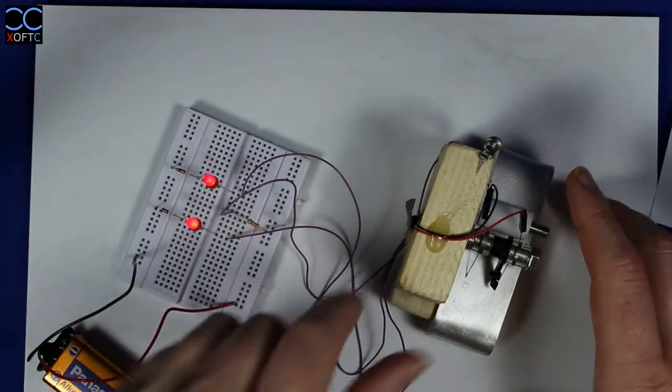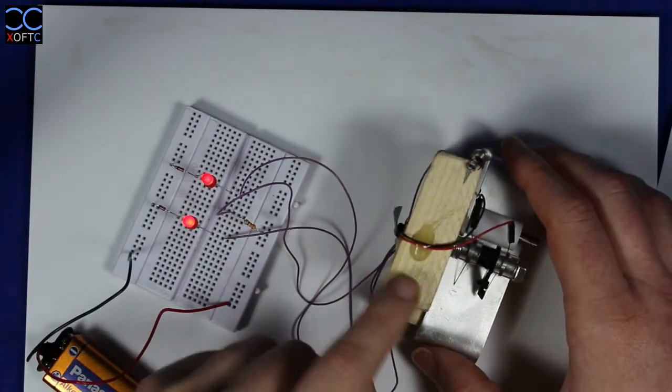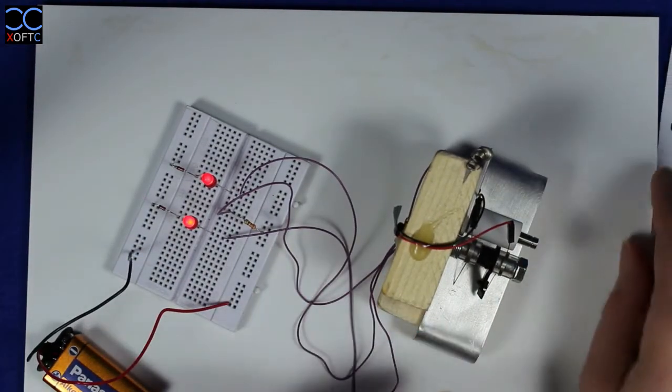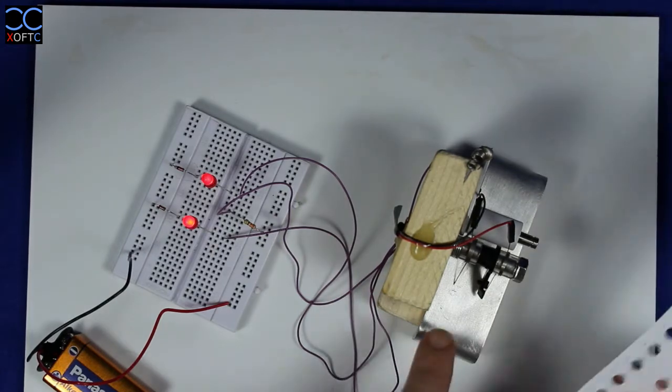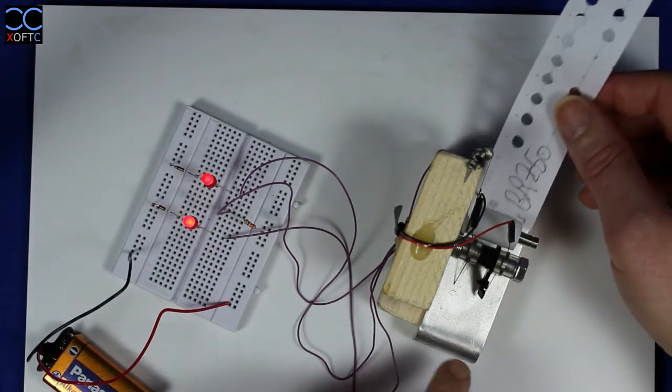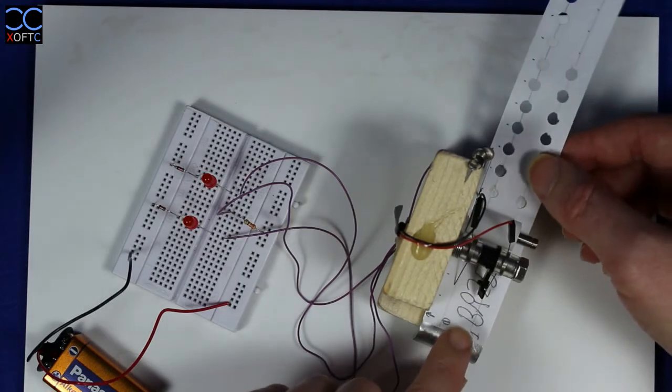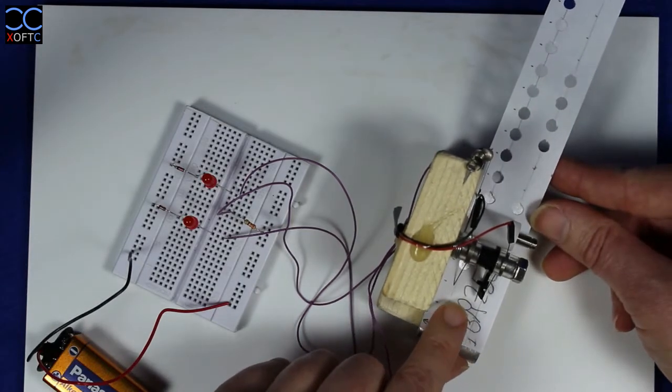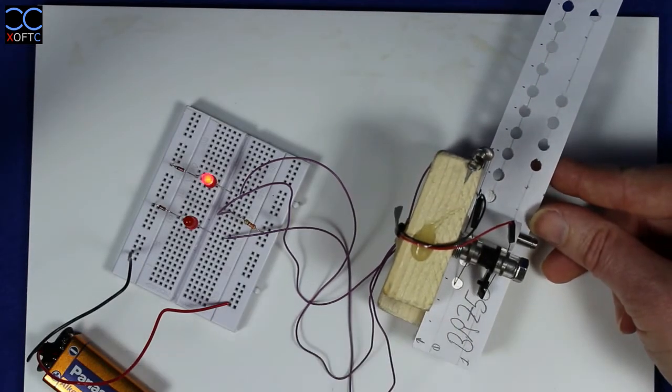So we can see immediately that the lights turned on and that means that both contacts are now touching the contact plate. And once I put our punch card you can see that they turned off and when we...